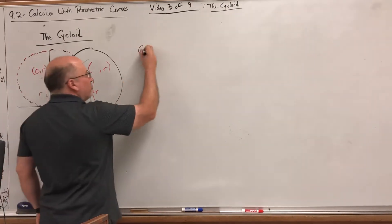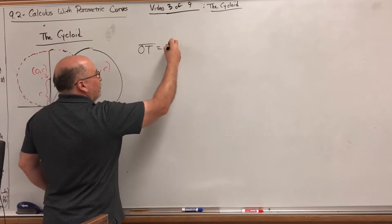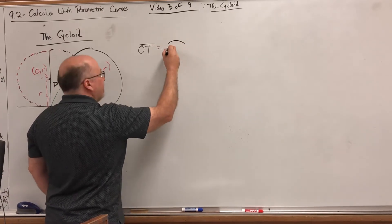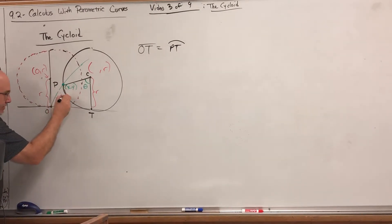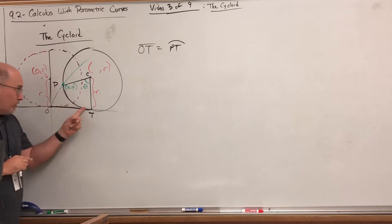The trick to that lies in two observations. Number one: whatever the distance between O and T is, it should match this arc length on the circle. Imagine just unwrapping the circle—just cutting it right here and laying it out. It makes sense that the distance from O to T is equal to the arc length from P to T.